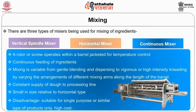The last type of mixer is the continuous mixer. Here a rotor or screw operates within a barrel jacketed for temperature control. There is continuous feeding of ingredients. The mixing is variable from gentle blending and dispersing to vigorous or high-intensity kneading by varying the arrangement of different mixing arms along the length of the barrel. There is constant supply of dough to the processing line and it is small in size relative to the horizontal type. However, the disadvantage is that it is suitable for single purpose or similar type of products only, hence causing high cost.